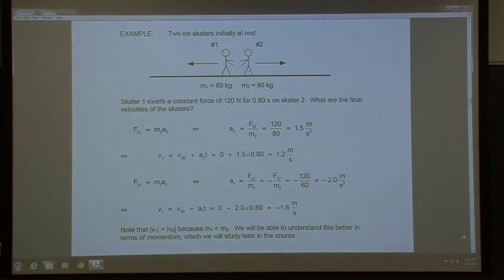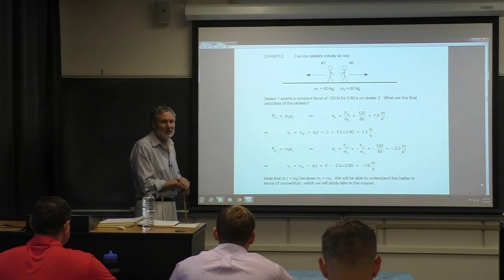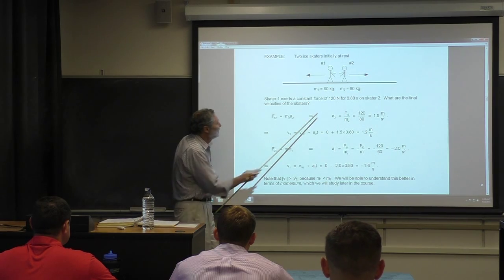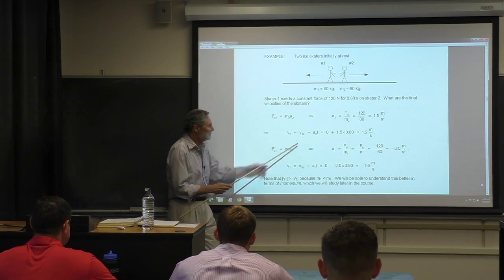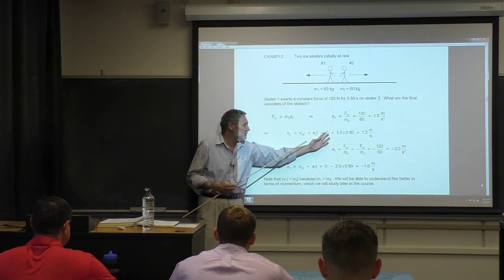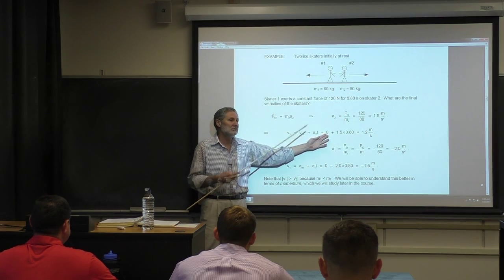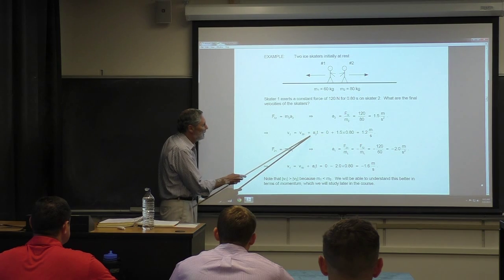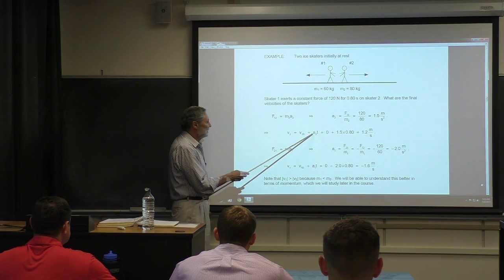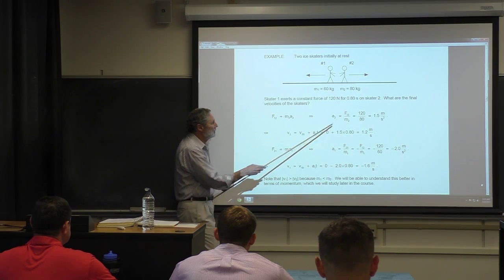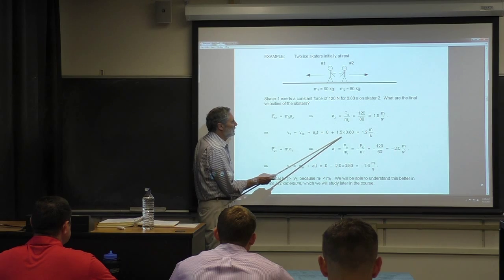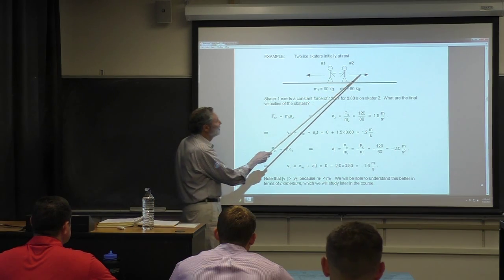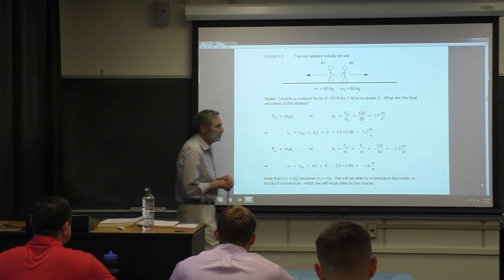This has now become a kinematics problem. If we want to find the final velocity, we use the equation for constant acceleration. This is linear; the initial velocity is zero, so it's just acceleration times time. We know both, and we get 1.2 meters per second as the final velocity of this person.